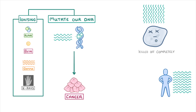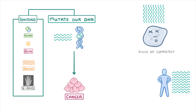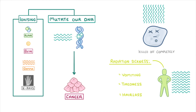This is why if you receive large doses of radiation across your entire body, you get radiation sickness, which can lead to vomiting, tiredness, and hair loss. Basically, loads of your cells have either been destroyed or are badly damaged, so overall you feel really ill.